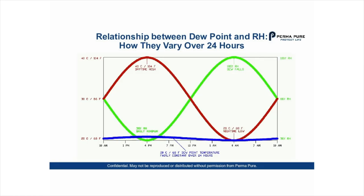Now let's look at the relationship between dewpoint and relative humidity and how they vary over 24 hours. In this graph, the red curve is the temperature, the green curve is the relative humidity, and the blue curve is the dewpoint. You can see that throughout a day the dewpoint doesn't really vary very much, but over the course of 24 hours you have a sinusoidal effect where the relative humidity rises and falls in inverse proportion with the temperature.